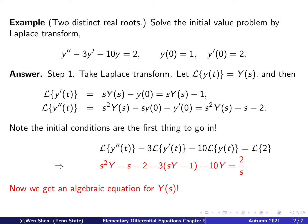So let's put in what we have found. The transform of y double prime goes in, then 3 times the transform of y prime, and then minus 10 times the transform of y is capital Y. The transform of 2 is 2 over s. I highlight this equation in red because starting from a differential equation for y, after taking the Laplace transform we end up with an algebraic equation for Y(s).